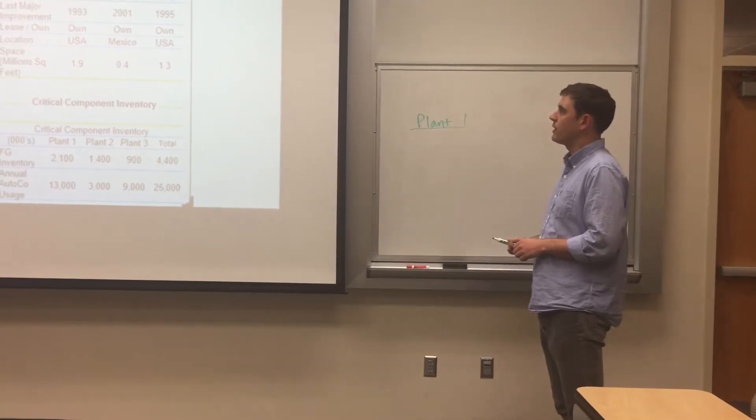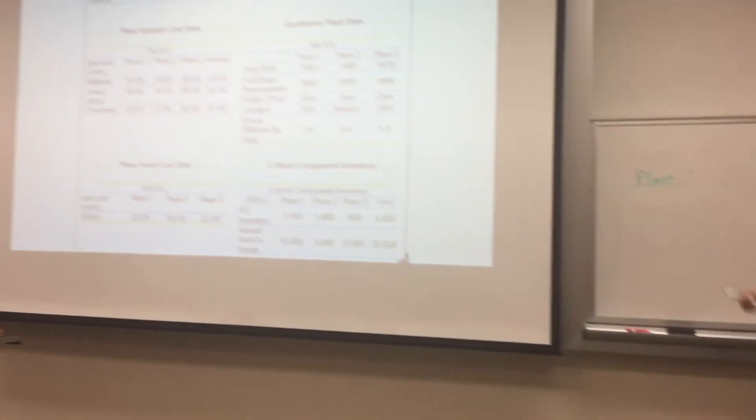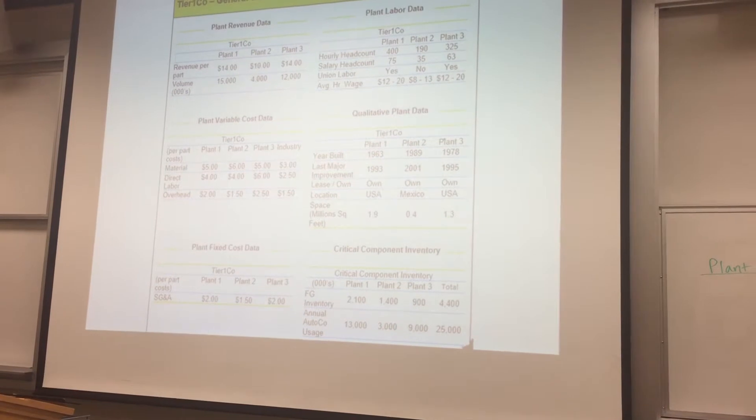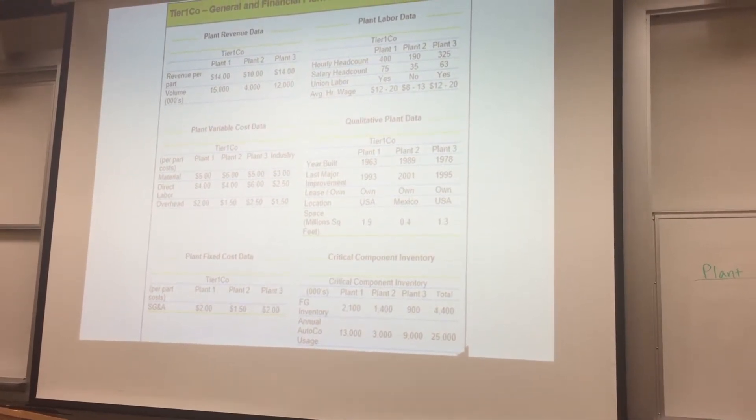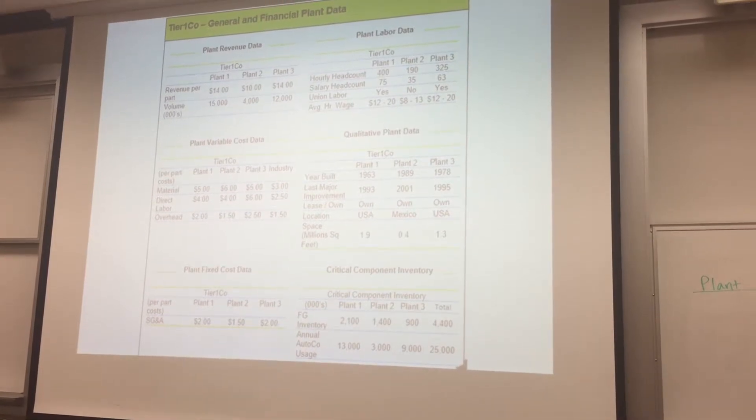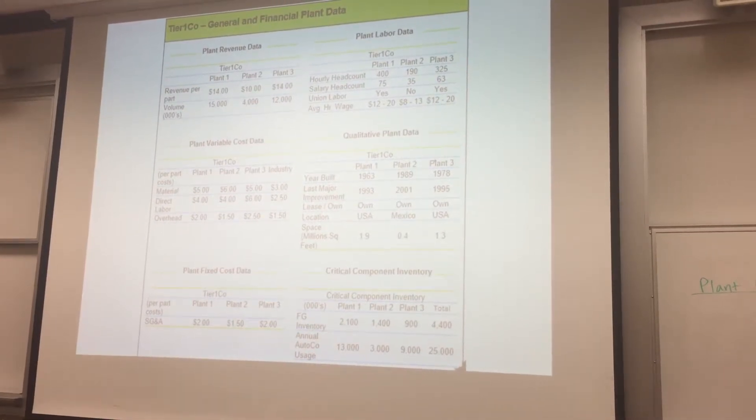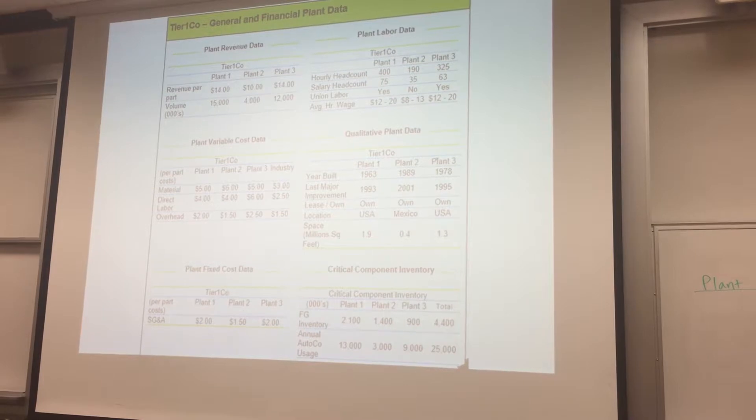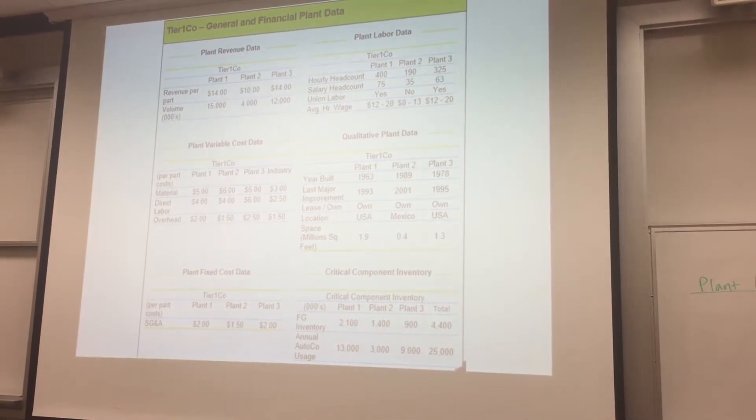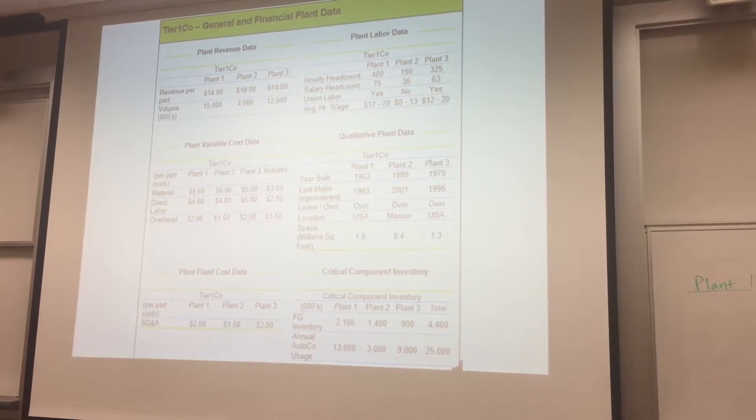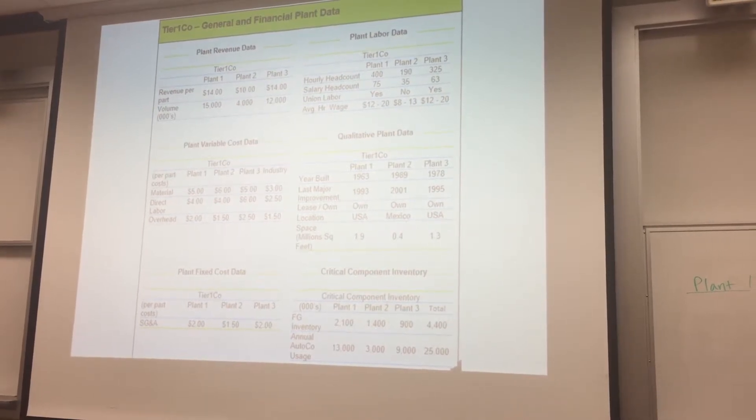To determine profitability, I'm going to take total revenue, which I can find by multiplying revenue times volume, and then subtract from that both the variable costs and fixed costs. Thankfully, it looks like both variable costs and fixed costs are in costs per part, which means that I can create a profit margin for each good and then multiply that by the volume, which will help me save time.